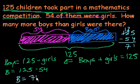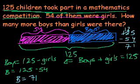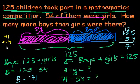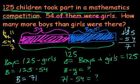So there are 71 boys. But we're not done — they didn't ask how many boys there are, they asked how many more boys than girls. So they want to know the difference between the boys and the girls. Boys minus girls: 71 minus 54. Let's borrow a 10 — that becomes 6, and 11. 11 minus 4 is 7, and 6 minus 5 is 1. So there are 17 more boys than girls.